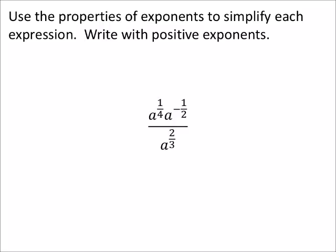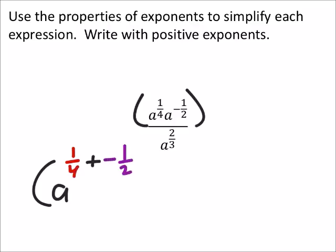So in the numerator, if I wanted to put this in parentheses, then I would have a to the power of 1 fourth, and then I would be adding that negative one half. But since it's dividing this a to the power of 2 thirds, it means I'm just going to take that and I would subtract the 2 thirds right there.